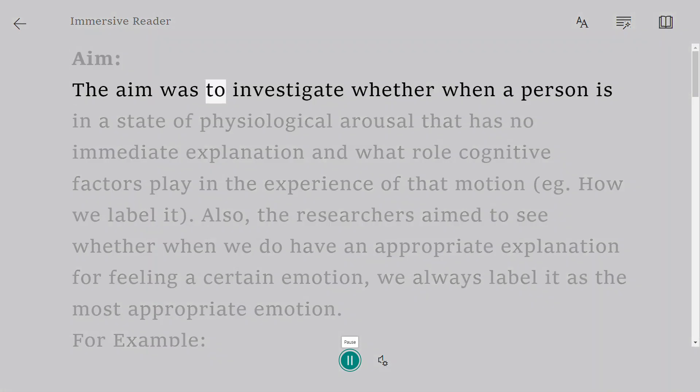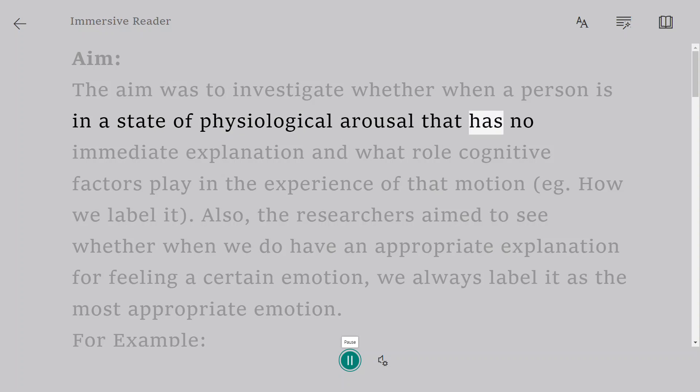Aim: The aim was to investigate whether when a person is in a state of physiological arousal that has no immediate explanation, what role cognitive factors play in the experience of that emotion - for example, how we label it.